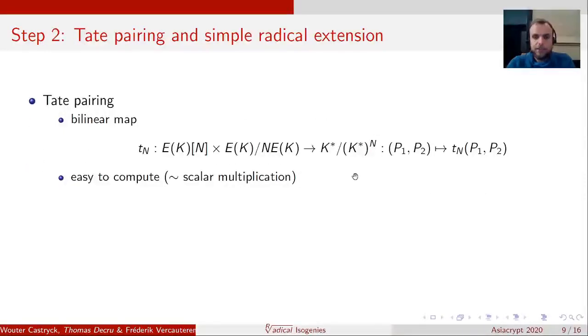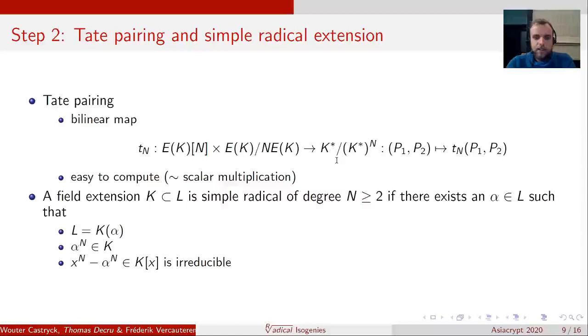In order to do this, we'll use the Tate pairing. The Tate pairing, as the name suggests, is a pairing, so it's a bilinear map. The exact definition is not that important. The only two things that are important for us is that, first of all, it's easy to compute. It's pretty similar in complexity to a scalar multiplication, and the codomain is the following coset. In particular, note that the Tate pairing is only defined up to N powers.